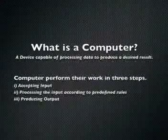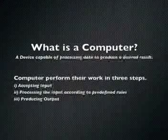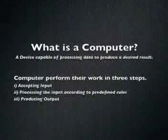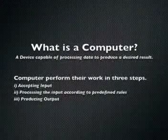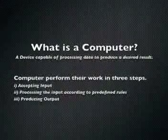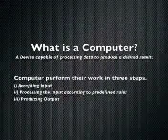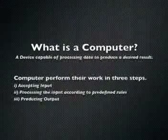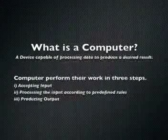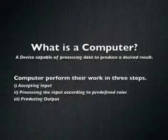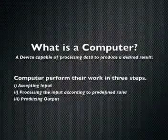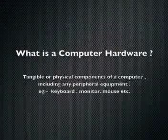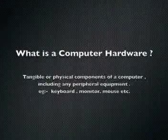What is a computer? A computer is a device capable of processing data to produce a desired result. Computers perform their work in three steps: accepting input, processing the input according to predefined rules, and producing an output.